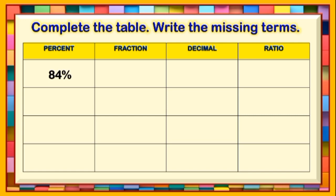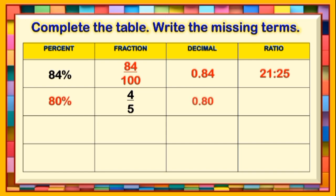The correct answers are: 84/100, 0.84. The second given number's correct answers are 80%, 0.80, and 4 is to 5.